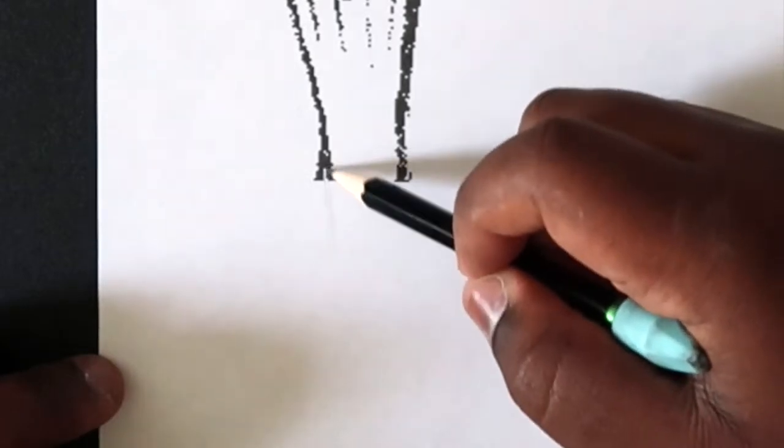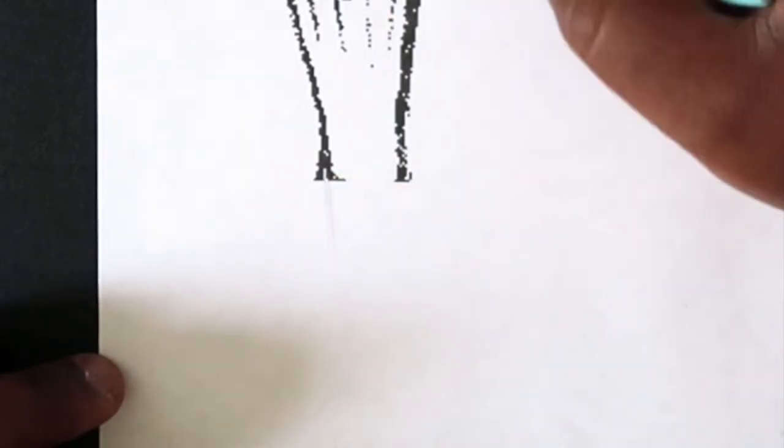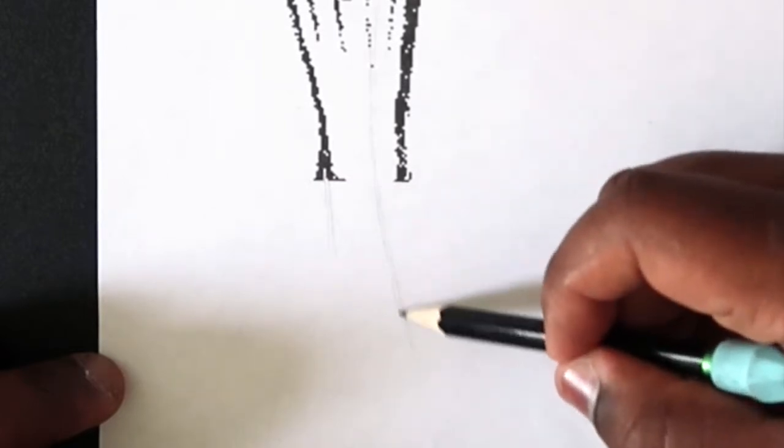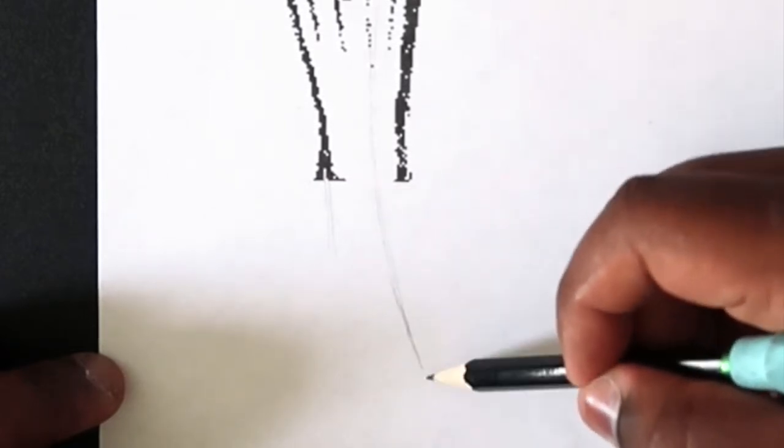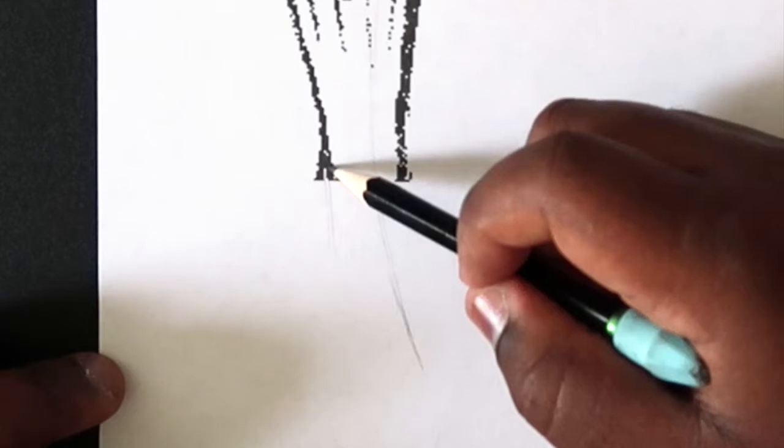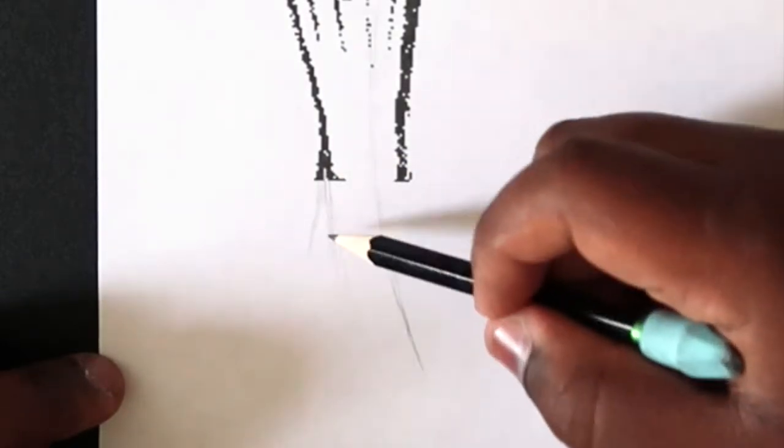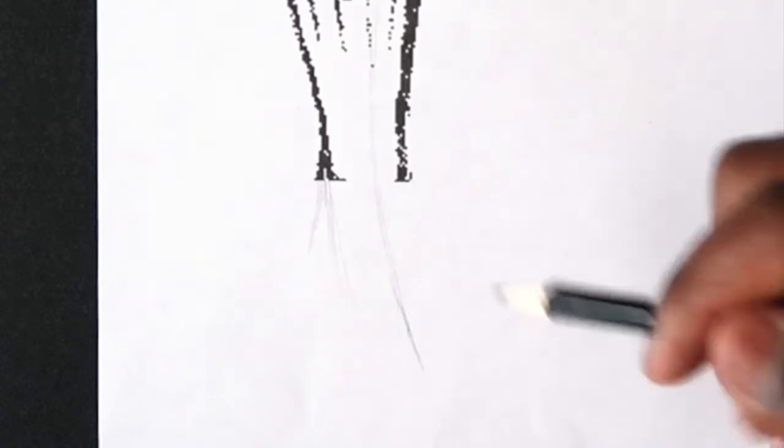So first thing you're going to want to do is you want to map out your perspective line so you can find the true middle of it. And then once you do that, you can start making the wedge because the foot is mainly a wedge, so you want to map out the shape of that.